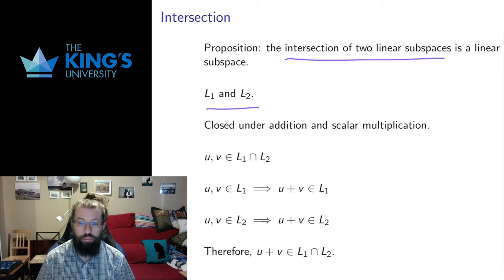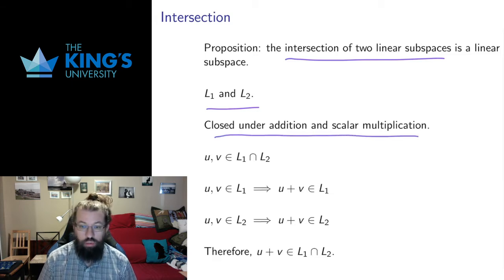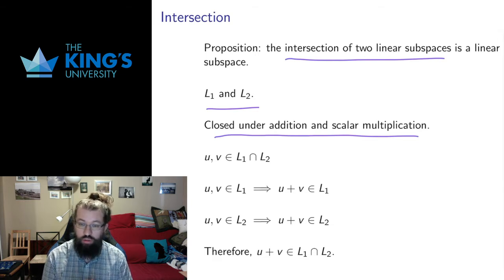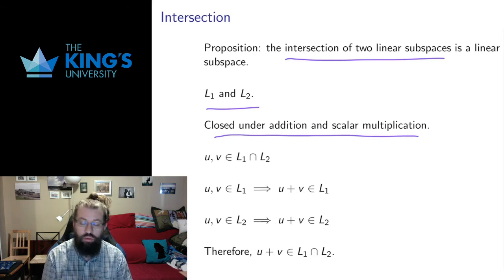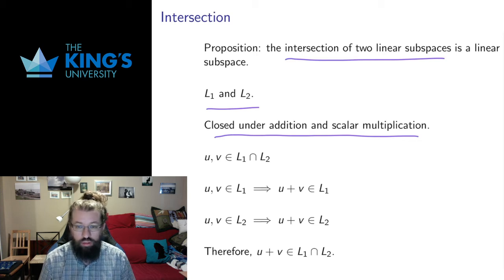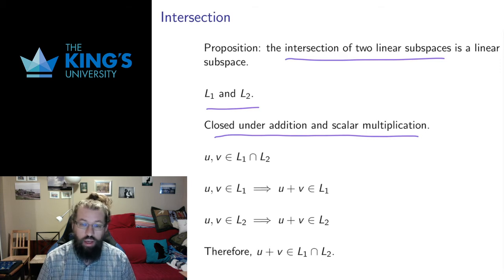I need to work with two linear subspaces, so I'll call them L1 and L2. By definition they are closed under addition and scalar multiplication — I can use that fact and I have to use that fact. What I want to prove is that the intersection is a linear subspace, so I have to prove that the intersection is closed under addition and closed under scalar multiplication. Those are the two things that define a linear subspace, so those are the two properties I have to satisfy.